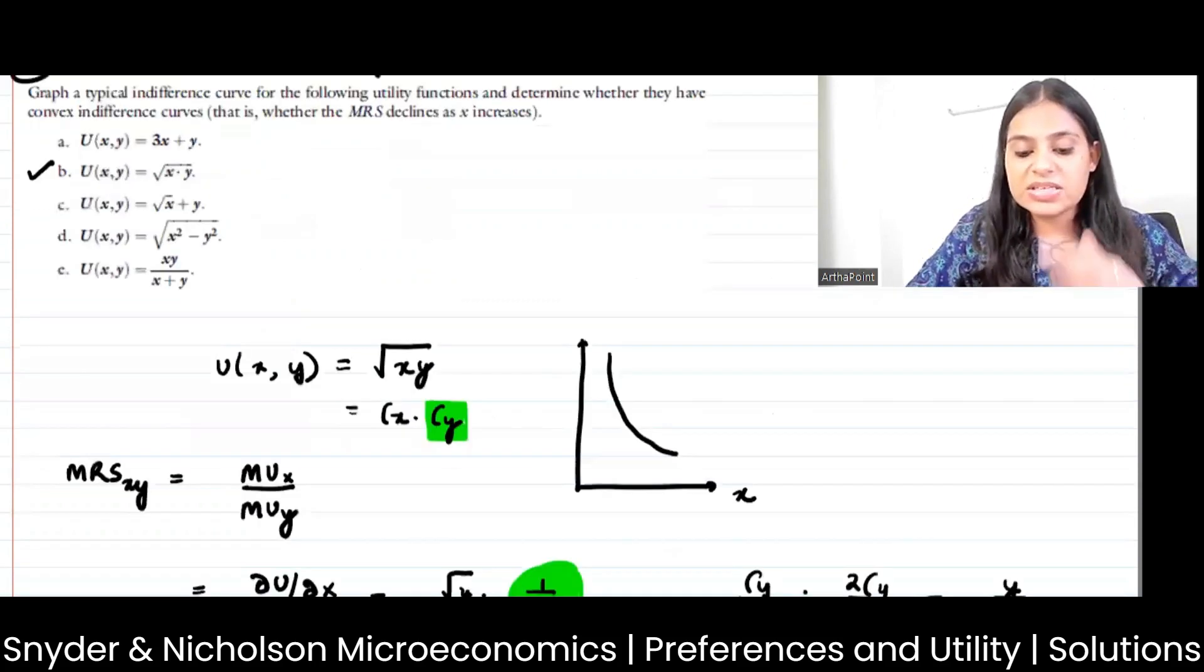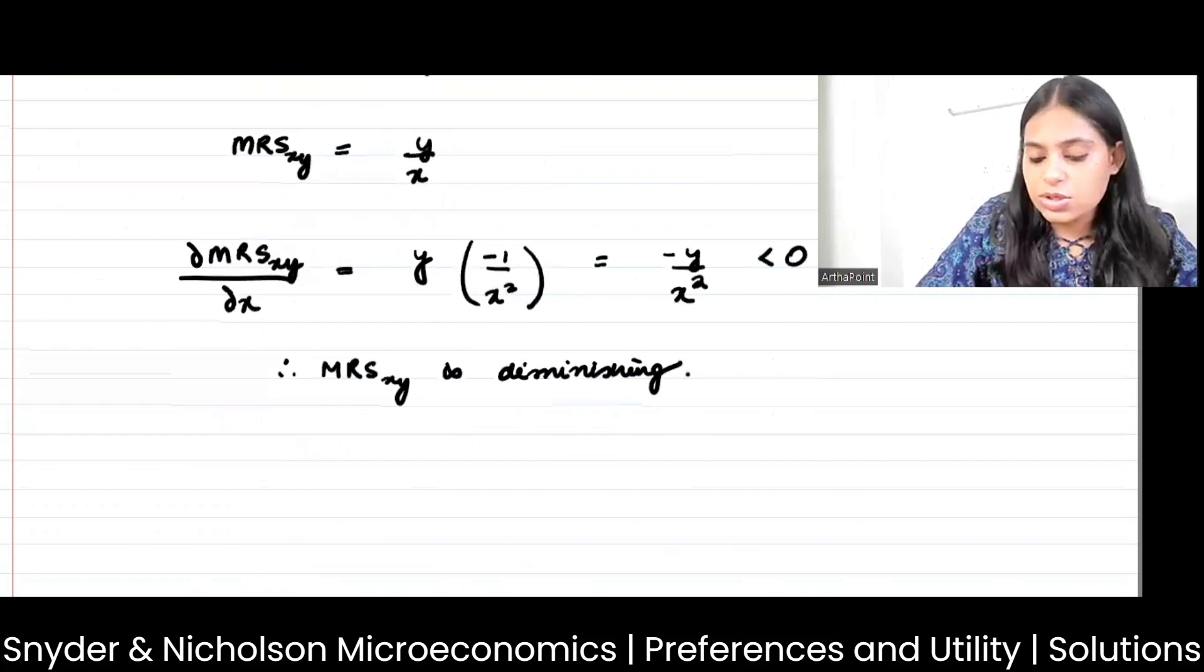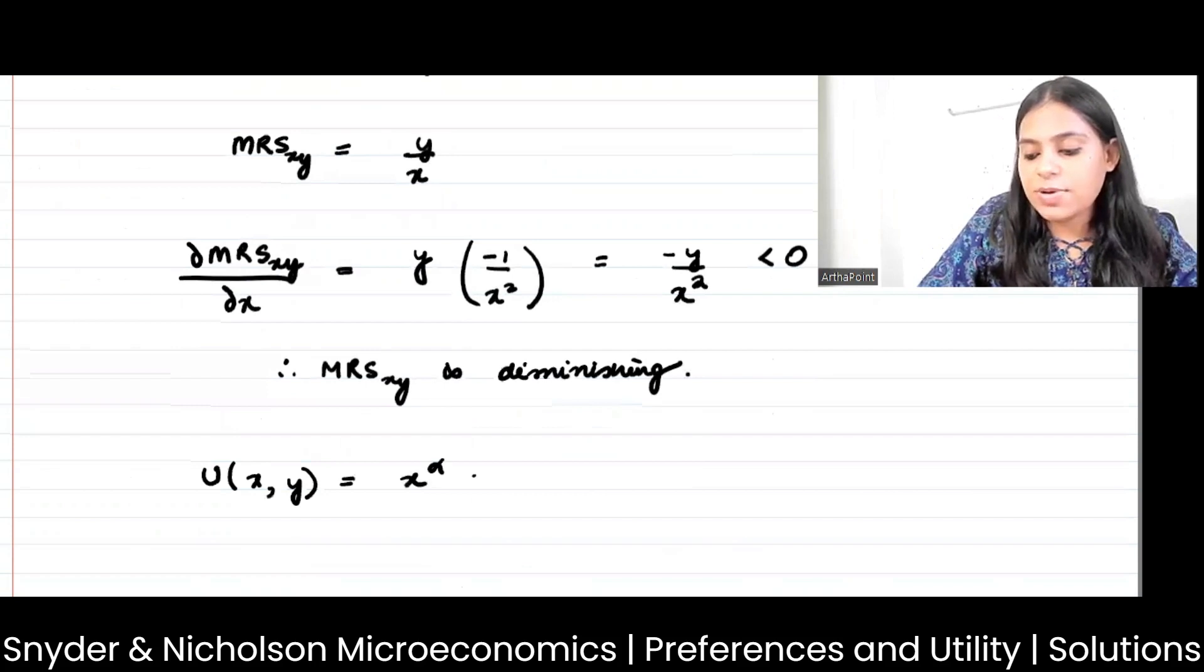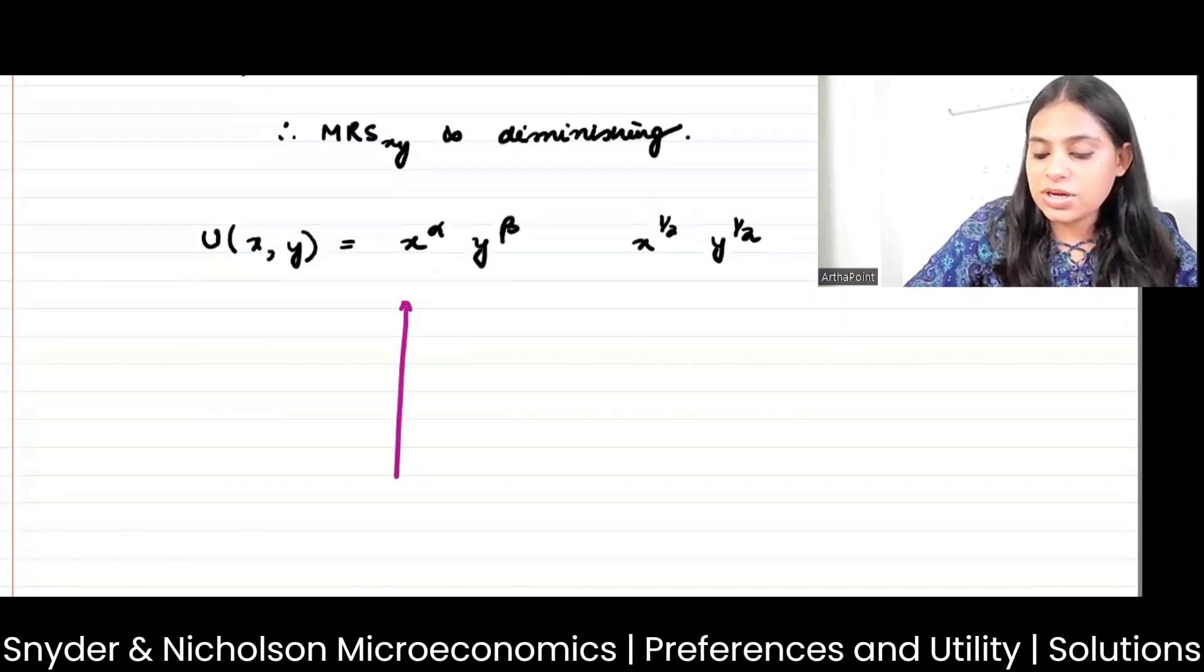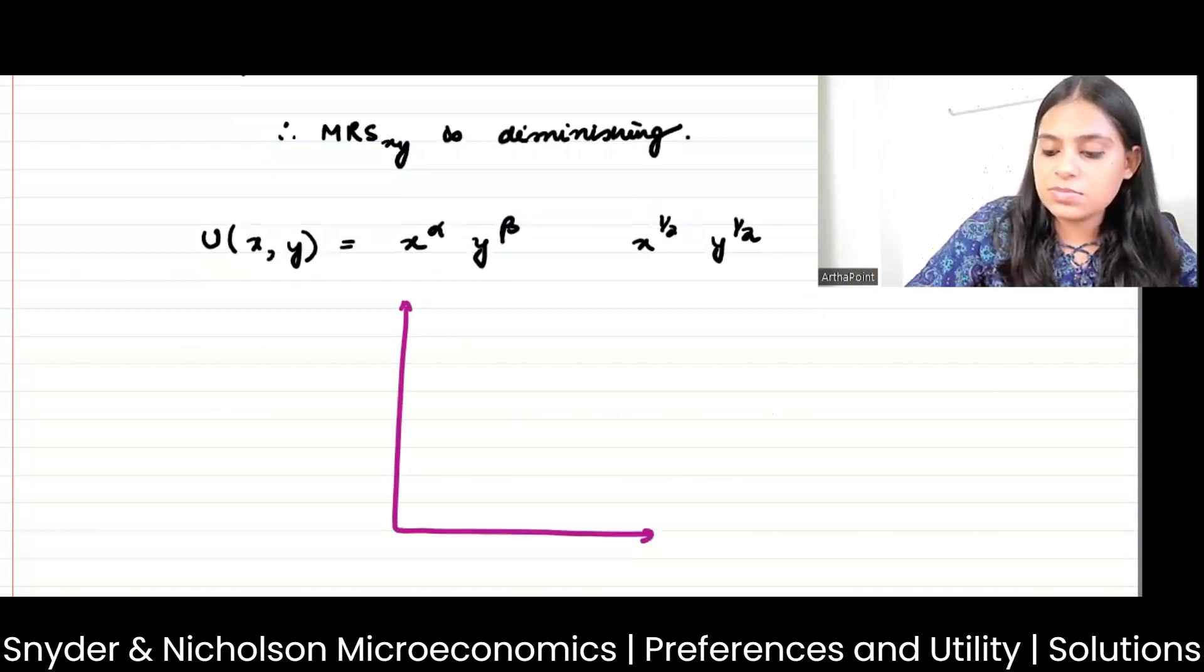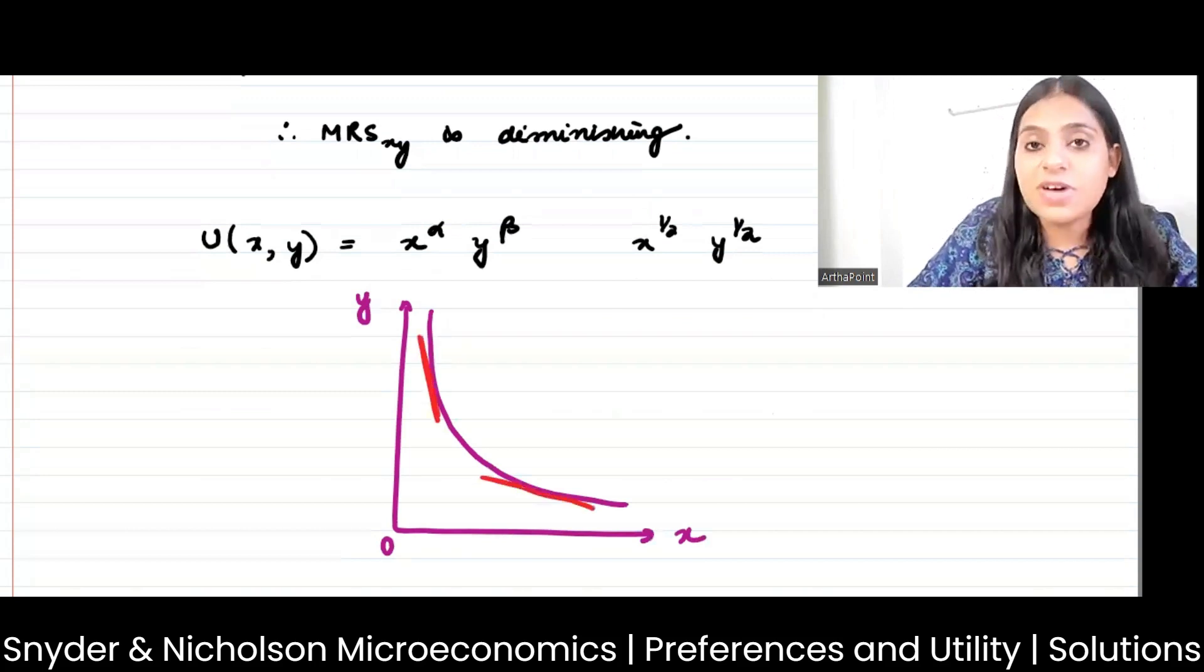And if you look at this utility function, this is a clear Cobb-Douglas utility function, well defined. So this is of the form x to the power alpha, y to the power beta, because here my alpha is half and beta is also half. So a well-defined utility function, it looks like this. This is x, this is y. And note that in this case the MRS, which is the slope, it's a function of the ratio of the two inputs, so it's a function of how much y and x you use.